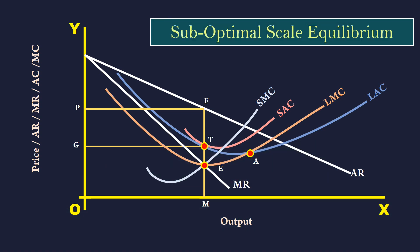It is called sub-optimal scale equilibrium because the monopoly firm is operating on the falling side of the Long Run Average Cost Curve and Plant Curve. There are unutilized productive capacity and economies of scale.